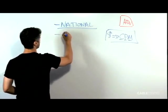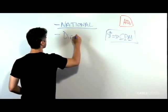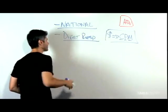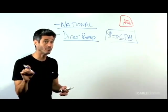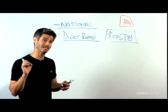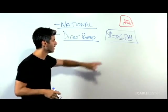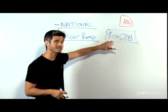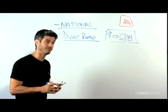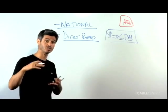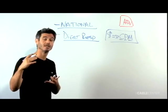This is called direct response. Direct response are ads that have a phone number or a website at the end of the ads. And they are direct response. National advertisers pay a guaranteed CPM.